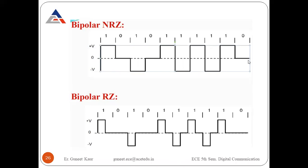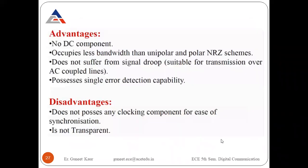In bipolar RZ, for a one the signal is high for the first half of the bit period and returns to zero for the second half. For zero it remains at zero. Alternate mark inversion is applied: positive one, then negative one, then return to zero. The pattern of positive, negative, positive, negative continues, with return to zero for each one.